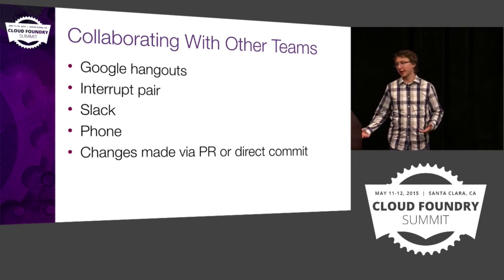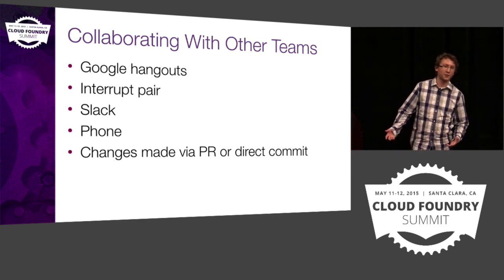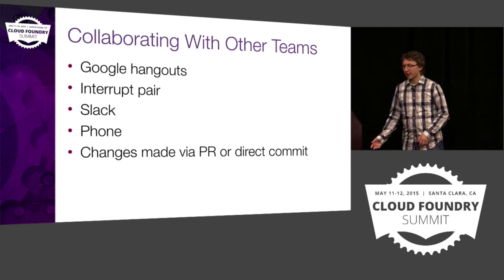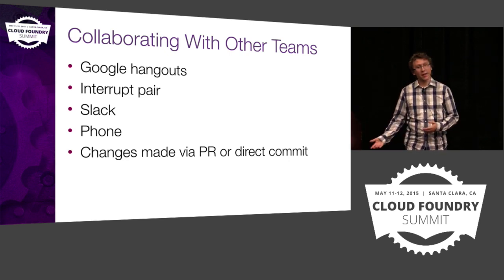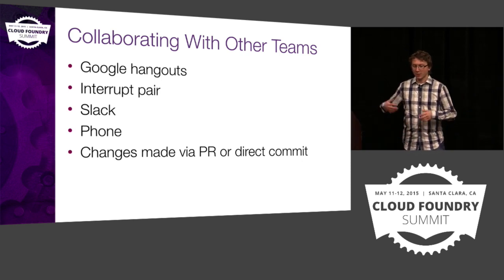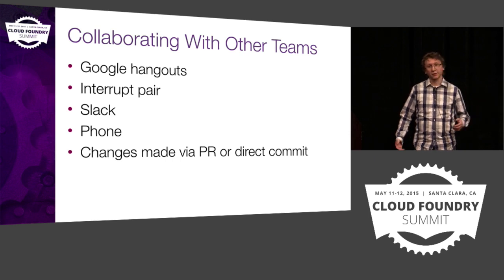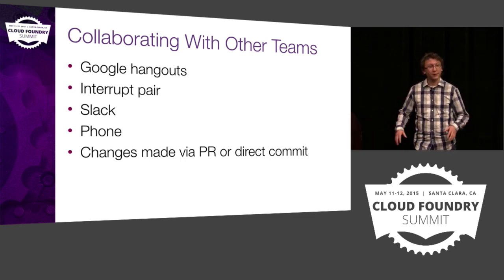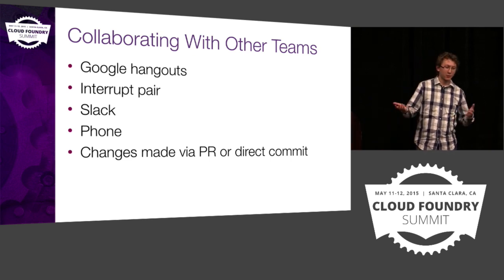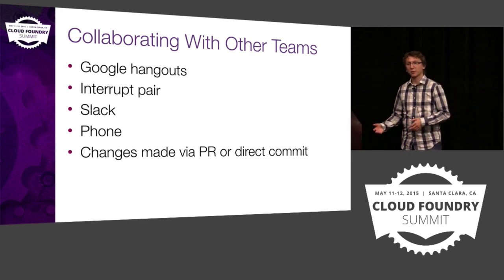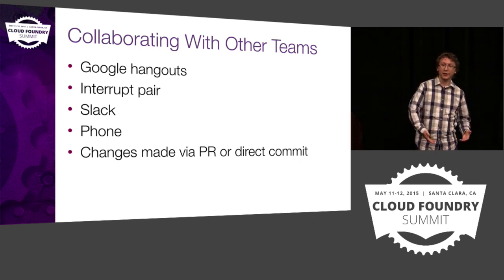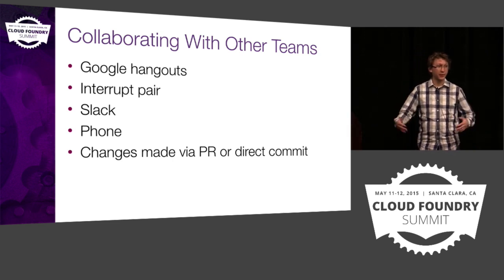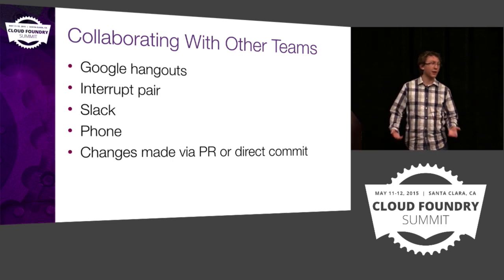Another important tool for non-face-to-face communication is Slack — just an internal messaging tool. Something really important about the runtime team is what we call an interrupt pair. Every morning two people — one pair — are randomly selected as an interrupt pair. Anyone inside CF who has any issues can literally interrupt the interrupt pair. These people are responsible for going to help them, taking a look at their issues, sometimes debugging, sitting down with them and understanding whether there's really a problem, whether we need to add a story, or whether they're just not configuring something right.